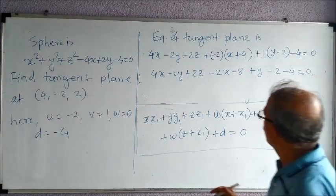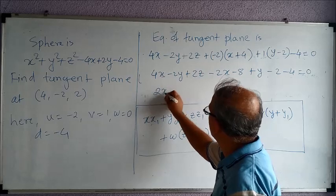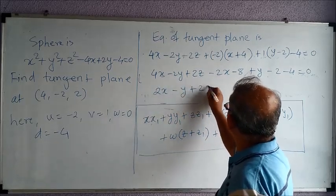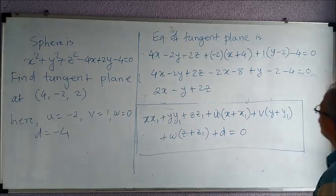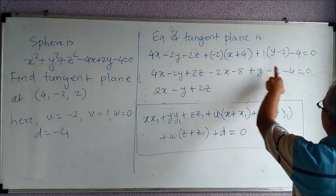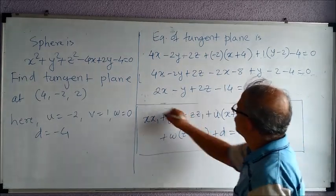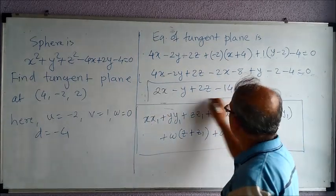If I combine everything, what I will get is 2x - y + 2z. Then this will be -8 - 2, -10, -4, equals -14 = 0. So see that this is the equation of the plane.